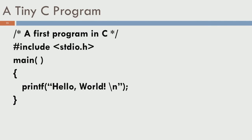Let's look at a tiny C program. You may not understand it right away, but it's really tiny - it has only 6 lines of code. The first line is actually a comment. It says 'a first program in C,' and the next line says hash include stdio.h.